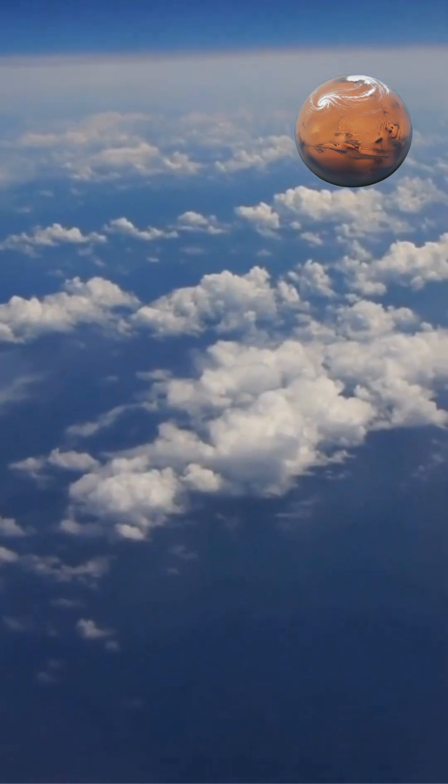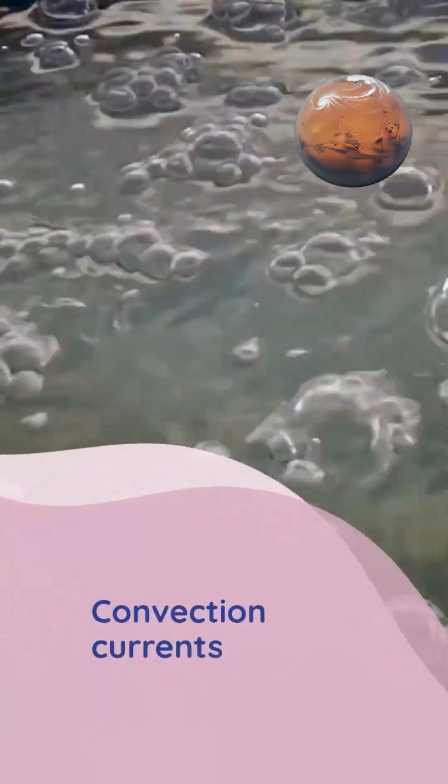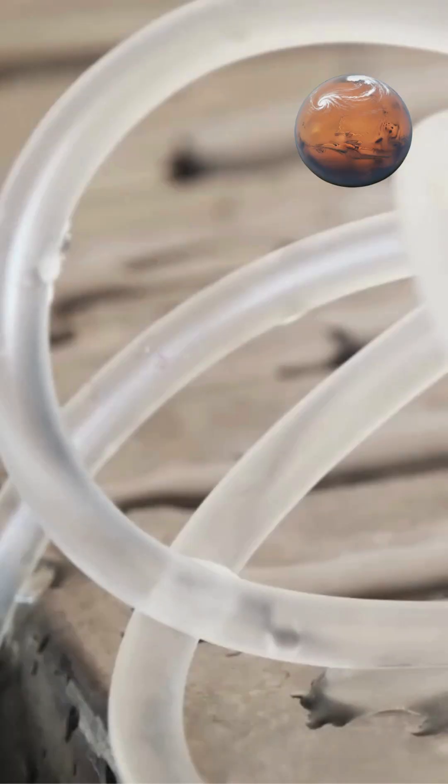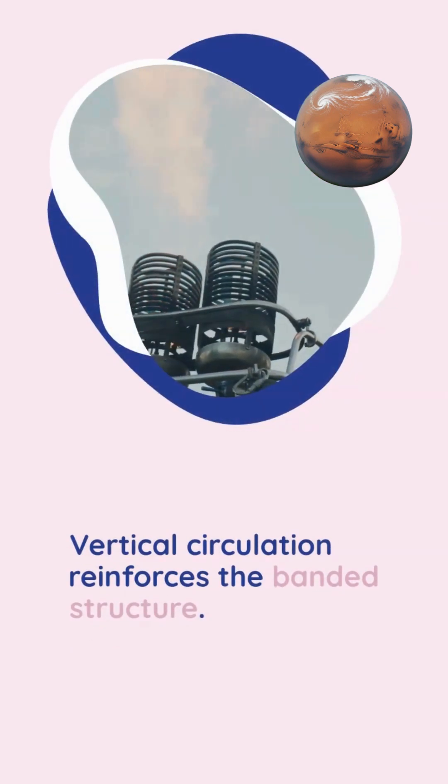Jupiter's internal heat also drives atmospheric activity. The planet radiates more heat than it receives from the sun, generating powerful convection currents. Hot gas rises from deeper layers while cooler gas sinks, creating vertical circulation that reinforces the banded structure.